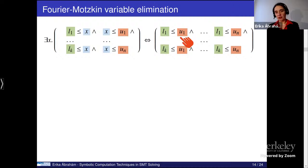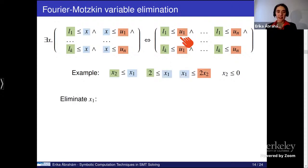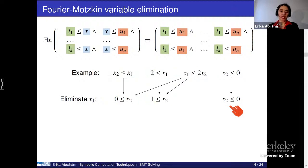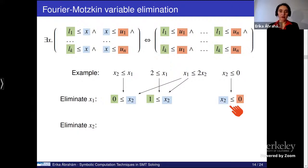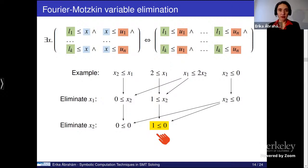So for example, if you have these four constraints, we first want to eliminate x1. So x1 has here two lower bounds and one upper bound. We combine each with each. So we get two constraints. And the one without having x1 we just keep. We go on. Eliminate also x2. So here we have again two lower bounds and one upper bound. We combine each with each. And then we recognize there is a conflict because one cannot be less or equal zero. So this set of constraints is unsatisfiable.